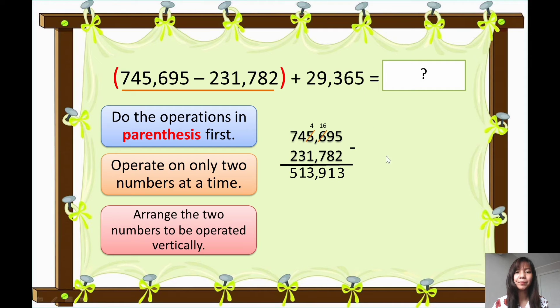Plus 29,365. All right, then write the line. So now let's add: 3 plus 5 is 8. 1 plus 6 is 7. 9 plus 3 is 12, so write 2, carry 1.